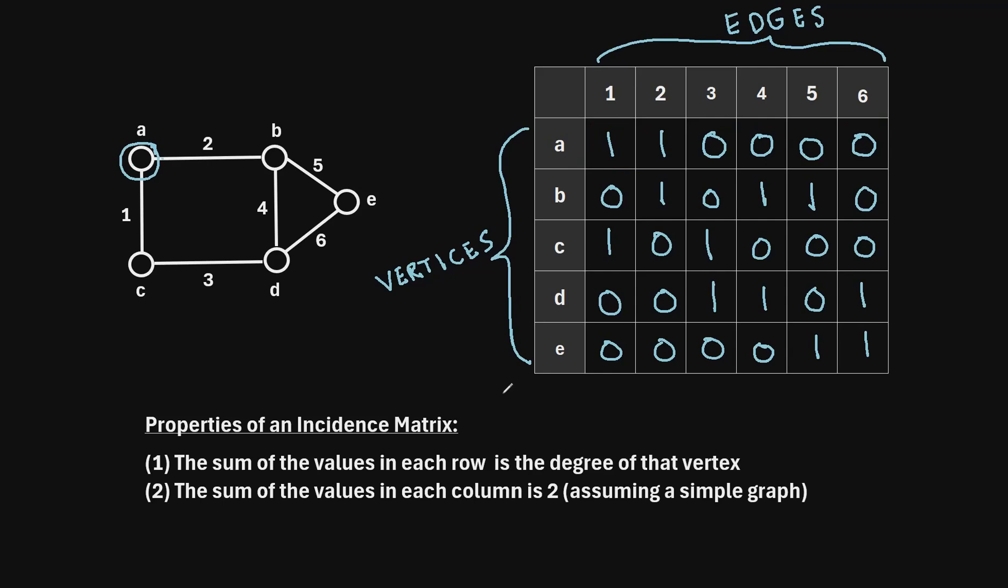So remember, the degree is just the number of edges that are touching vertex A. We can see that indeed there are two edges that are touching vertex A, or that are incident with vertex A. So the degree of vertex A is 2.